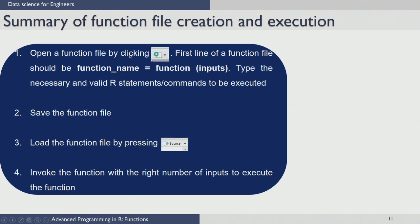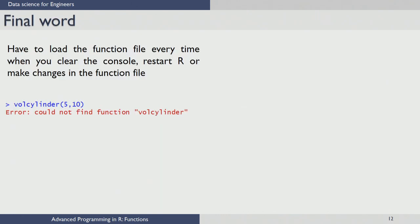In summary, these are the steps for creating a function file in R and executing it. First, open or create a function file by clicking the plus symbol or File tab in the toolbar. Define the function using the syntax: function name, keyword 'function', and input arguments. All statements inside the function must be valid R statements. Save the function file, then load it using the Source button. Once loaded, invoke or call the function with the right number of inputs to get the required result.